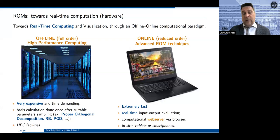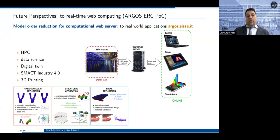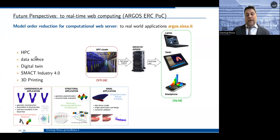There is an intermediate step — a computational web server called Argos, a proof of concept from an ERC project. The idea is that online computing is accessible via internet connection and a web browser, where the problem becomes a simple app or web page for extracting information in real-time, introducing inputs and extracting visualization and output. This allows better integration of emerging topics and technologies related not only to digitalization but also to additive manufacturing.